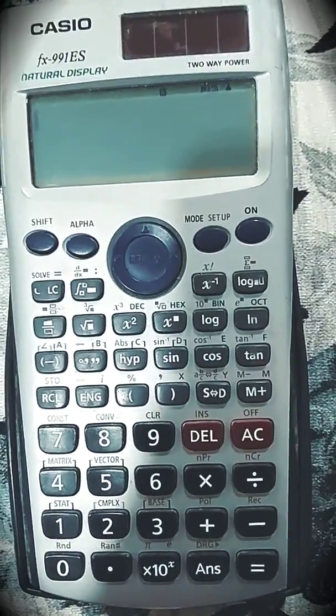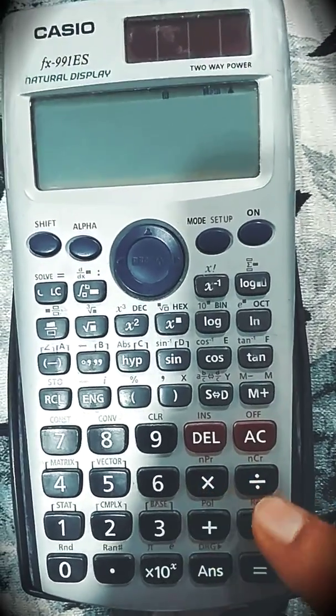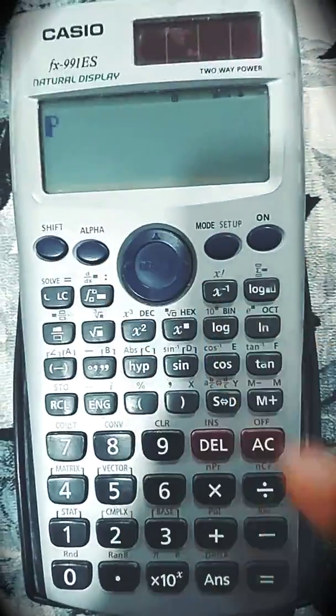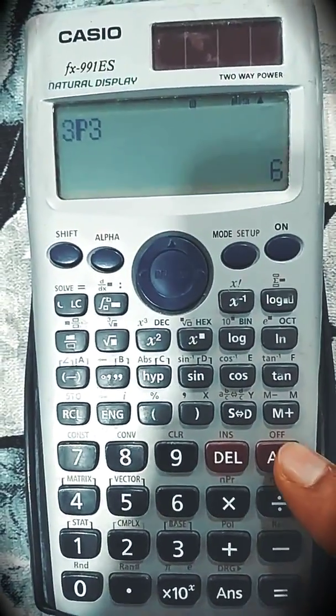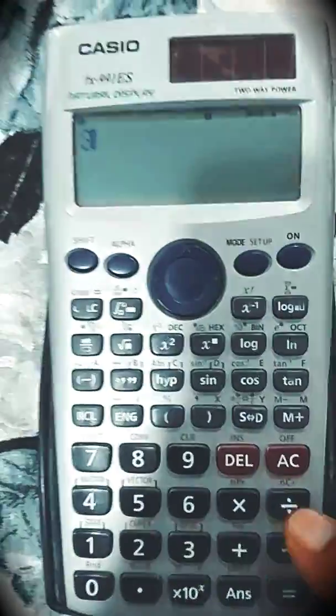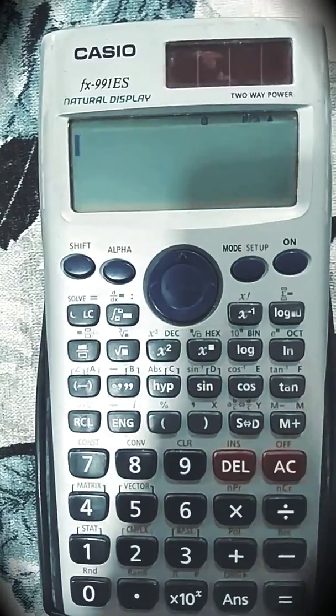AC. Again, if you want to find out permutation and combination, these two buttons can be used by using shift. So permutation 3P3, equal to 1, you will get the answer. Similar thing for NCR 3, shift NCR 3C3, so that is 1. Press AC.